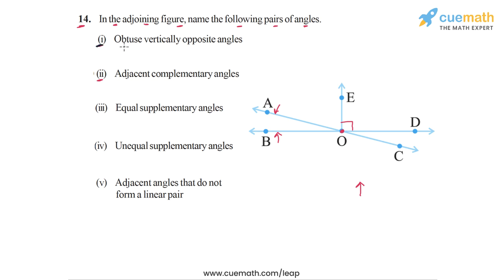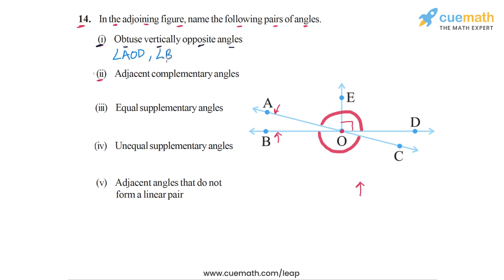In part one, we have to find a pair of obtuse vertically opposite angles. Looking at the figure carefully, angle AOD forms a pair of vertically opposite angles with angle BOC. We can see that both of these angles are obtuse, so angle AOD and angle BOC are the answer for part one — a pair of obtuse vertically opposite angles.